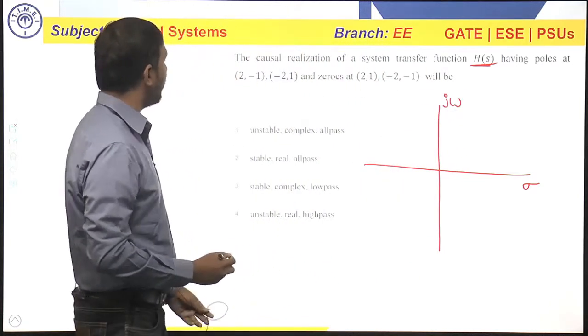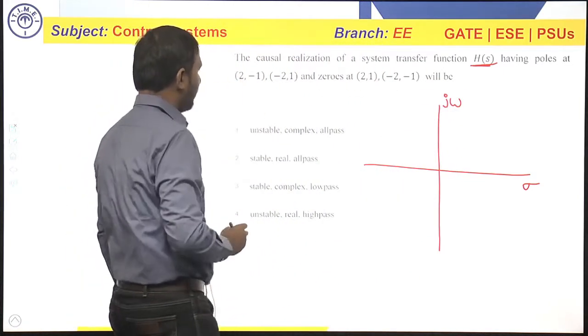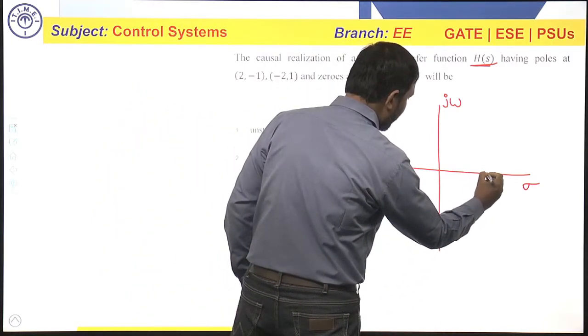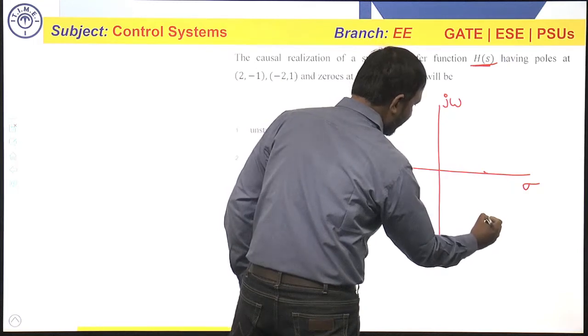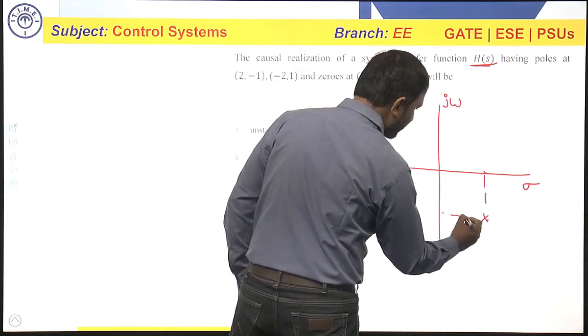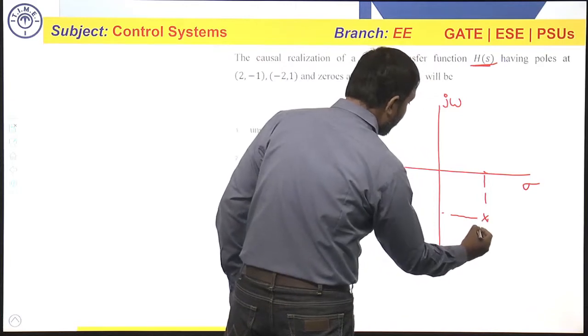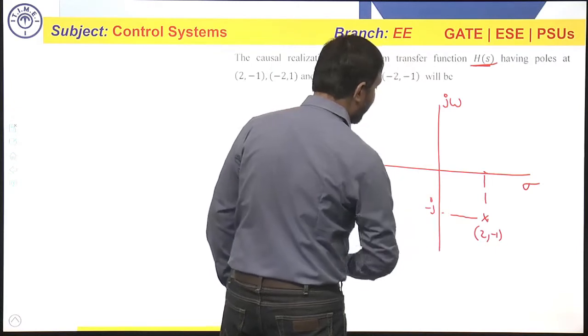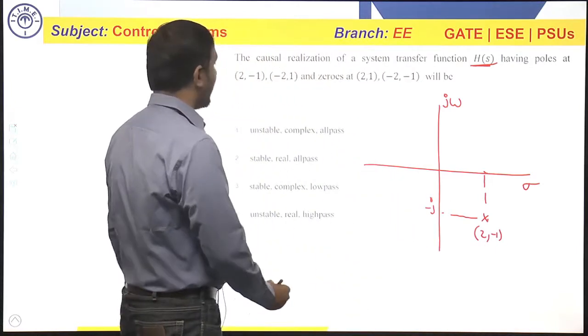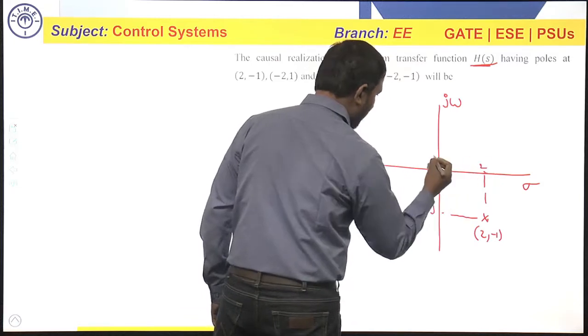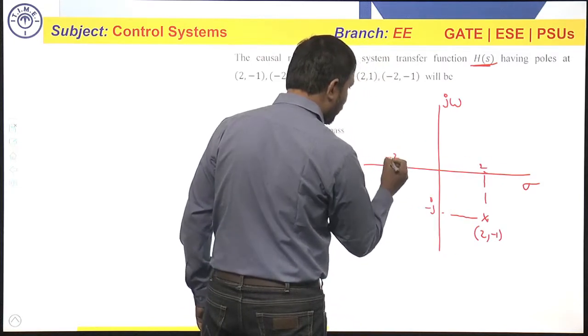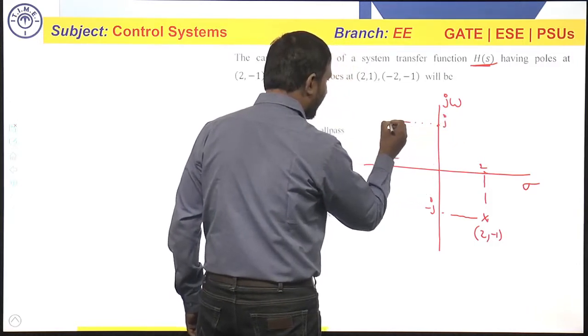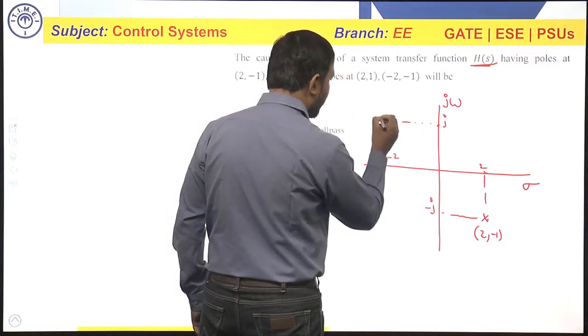Now let us plot the poles. Poles are located at 2 minus 1 means 2 minus j, so this is 2 minus j, here the first pole is located. 2 comma minus 1, this is minus j. Now, the next pole is located at minus 2 comma 1, minus 2 comma 1 means this is 2, this is minus 2 comma 1, this is j, here is the other pole, second pole.